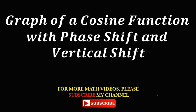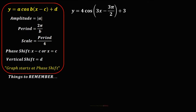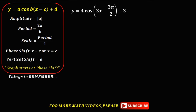So the graph of cosine function with phase shift and vertical shift. These are the things to remember when graphing a cosine function: the equation, the amplitude, the period, the scale, the phase shift, and the vertical shift. The graph starts at the phase shift — maximum height for the positive and minimum height for the negative.